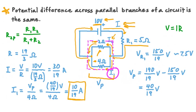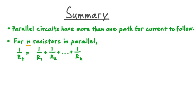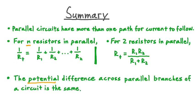Let's now summarize what we've learned about parallel circuits. First, parallel circuits have more than one path for current to follow, and current divides up across the various paths. For n resistors in parallel, 1 over their total equivalent resistance equals 1/R1 + 1/R2 + ... + 1/R_n. For exactly two resistors in parallel, their total resistance equals their product divided by their sum. And finally, the potential difference across parallel branches of a circuit is always the same.